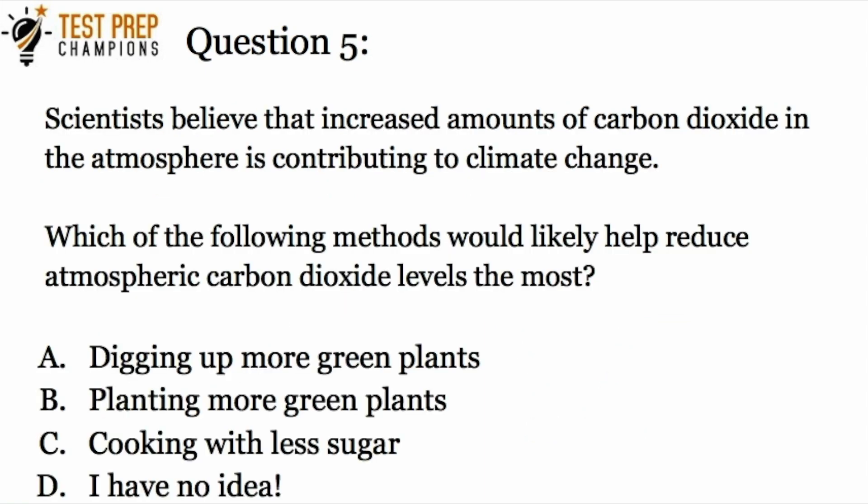Now we'll step up the difficulty a bit with a critical thinking question similar to what you can expect on the GED test. Question five: scientists believe that increased amounts of carbon dioxide in the atmosphere contribute to climate change. Which method would likely help reduce atmospheric carbon dioxide levels the most? The answer is B — planting more green plants. More plants means more photosynthesis, which means more carbon dioxide gets used up in that reaction.